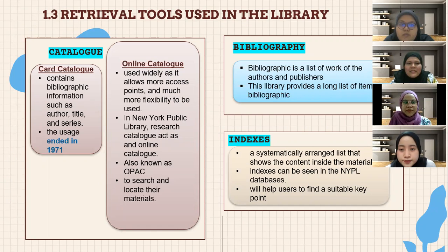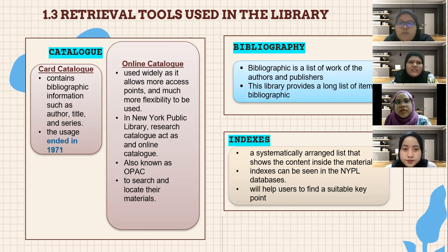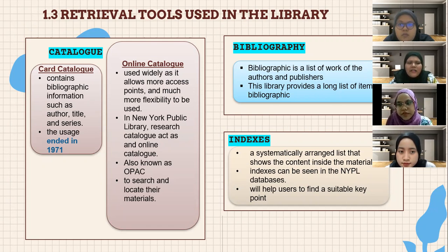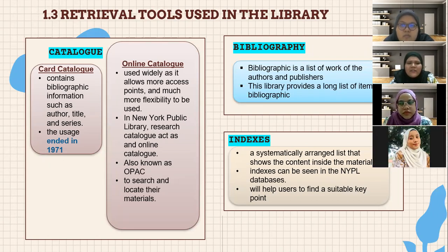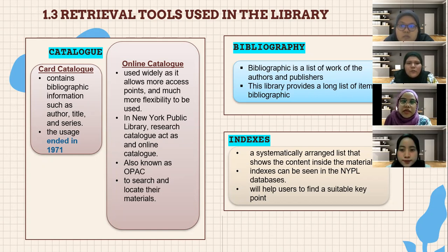Next is retrieval tools used in the library. There are three types of retrieval tools. The first is the catalog: at the beginning they used a card catalog, which contained bibliographic information such as author, title, and series. However, card catalog usage ended in 1971, and it proceeded to an online catalog, which has been used widely as it allows more access points and much more flexibility.